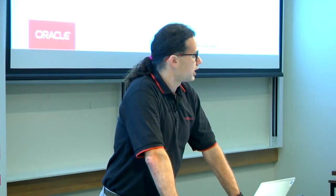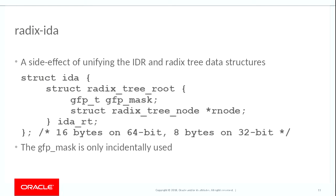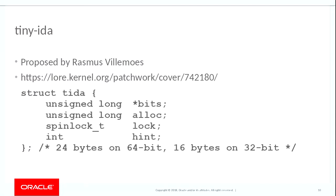Rasmus Vilamos proposed something called the tiny IDA, which would be a lot more efficient: 24 bytes on 64-bit or 16 bytes on 32-bit, about half the size, to allocate zero IDs. Once you started allocating IDs it would start with just eight bytes and double to 16 bytes then 32 bytes as you needed more bits. This was a great idea, except it really didn't scale up. The IDA can scale up to thousands or millions of bits, but the tiny IDA would be constrained by the maximum size of a single kernel allocation, which gets much harder the larger you grow it.